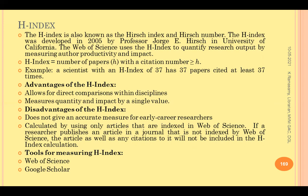For example, if your H-index is 37, it means your 37 papers have each received at least 37 citations. If your H-index is 5, it means all 5 papers have received at least 5 citations each. The advantages of H-index are that we can compare the productivity of authors within a discipline — the one with the highest H-index is considered the most productive — and it measures both quantity and impact in a single value, combining productivity count and literature usage.